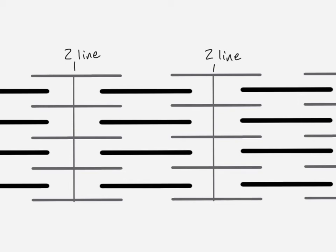Looking at the filaments in a two-dimensional picture, you can see actin filaments and myosin filaments overlapping. The myofibril runs all the way along with alternating actin and myosin. There are areas with only actin, areas with only myosin, and areas where they overlap. The line between sections is called the Z-line, where different proteins hold the actin filaments in place.